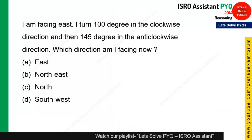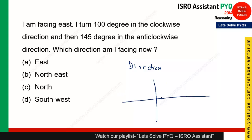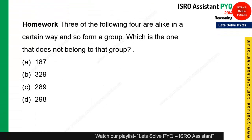This question is from Direction Sense Test. The person starts facing East, turns 100 degrees clockwise — moving past South toward Southwest direction. Then turns 145 degrees anticlockwise. Since 100 degrees clockwise and 145 degrees anticlockwise net to 45 degrees anticlockwise from East, the person ends up facing Northeast. Option B — Northeast — is the correct answer.